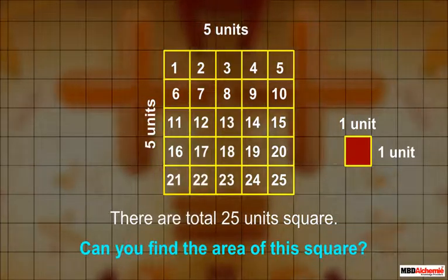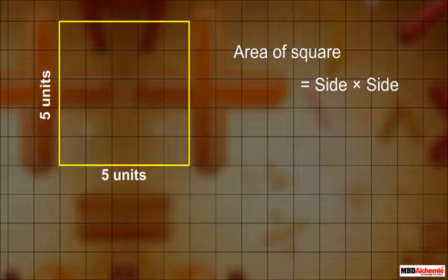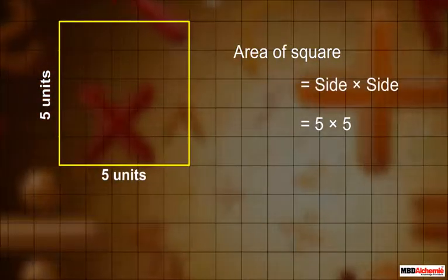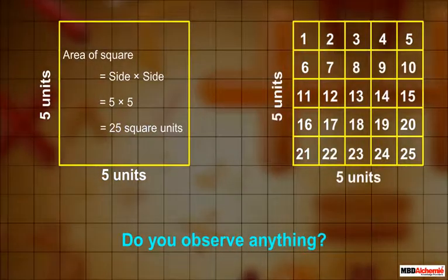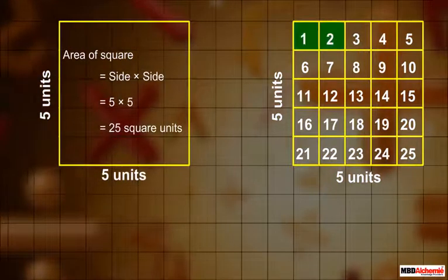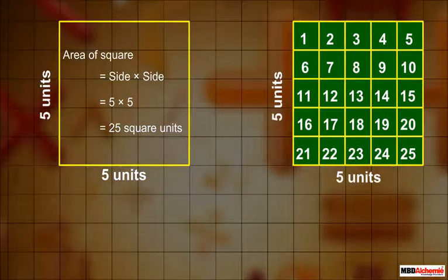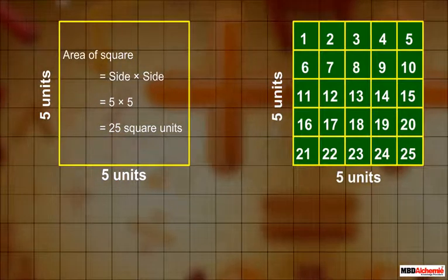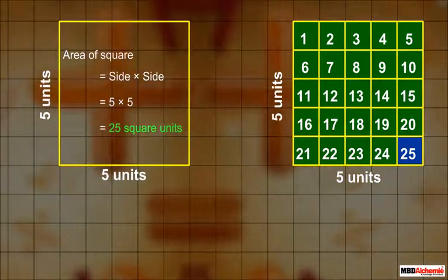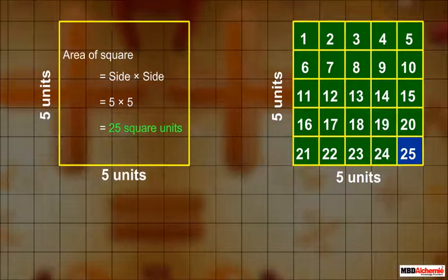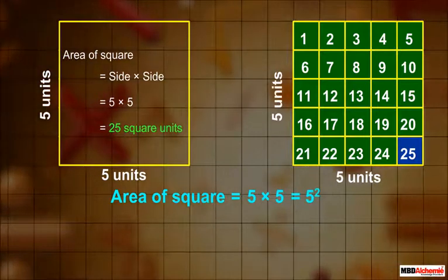Can you find the area of this square? The area of this square is side into side, that is 5 into 5, which is equal to 25 square units. Do you observe anything? The total number of blocks is the same as the area of the square. So here we see that when we multiply the length and width, we get a number times itself — a number squared. This means the area of a square of length 5 units is written as 5 into 5, equal to 5 squared.